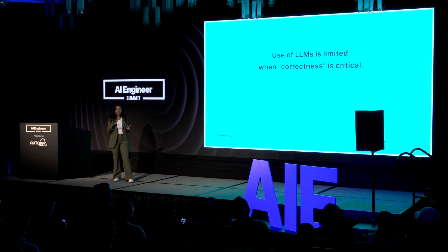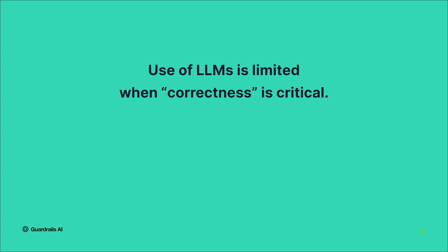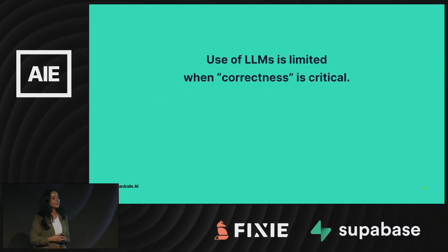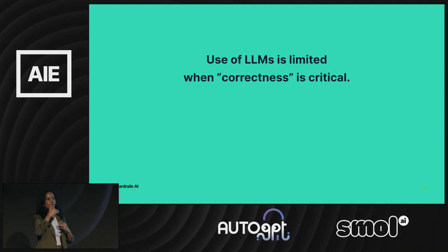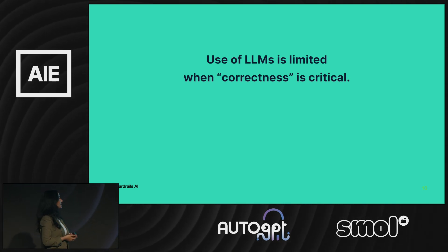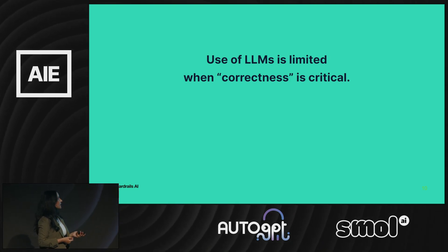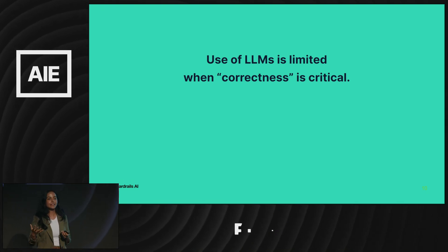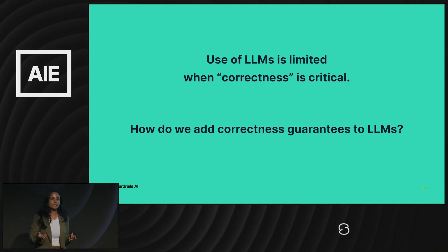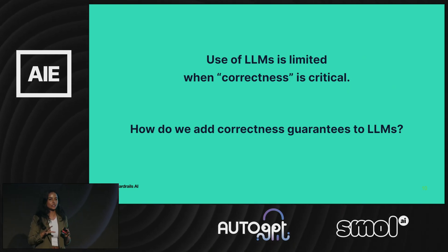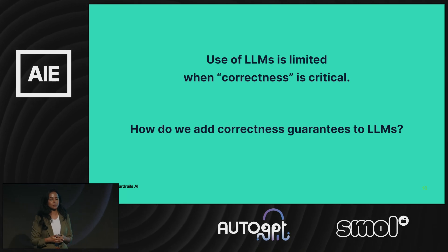So we end up in a scenario where use of LLMs is limited wherever correctness is really critical. I love GitHub Copilot — it's on my badge as my favorite tool. But if GitHub Copilot is wrong, you just kind of ignore it and move on. Same with ChatGPT — the chat interface is really great because it's iterative and you can give it feedback. But this is not the use case for a lot of really high-value critical applications. So how do we add correctness guarantees to LLMs while still retaining their flexible nature that allows them to adapt so well to so many tasks?